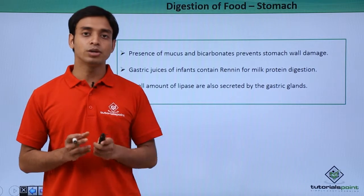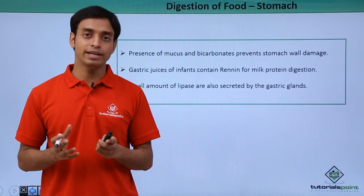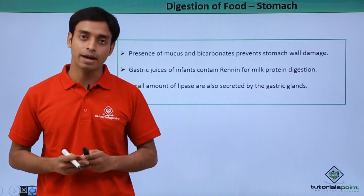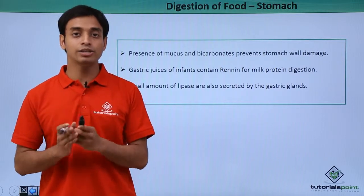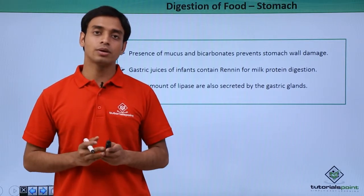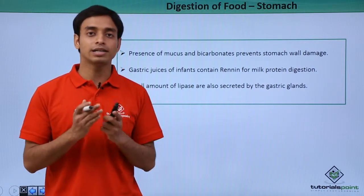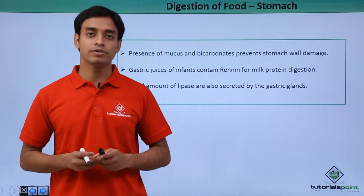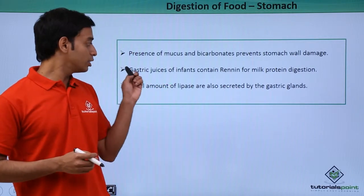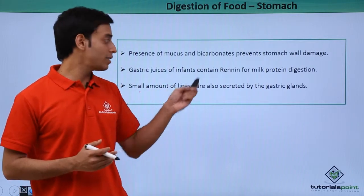The presence of mucus and bicarbonates prevents damage to the stomach wall. Mucus lubricates the whole area so that easy movement of food materials can happen, and it also protects the wall of the stomach from being damaged by the highly concentrated HCl secreted by the gastric glands.